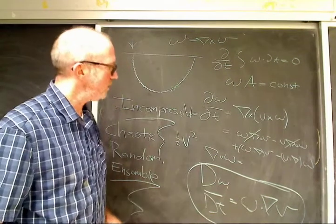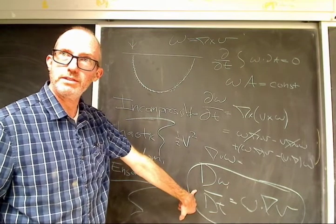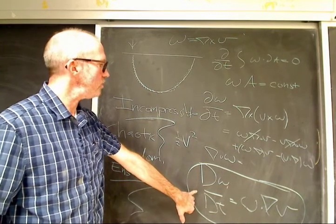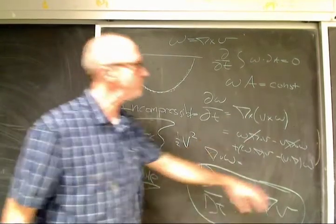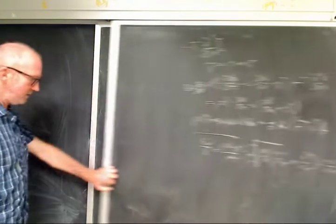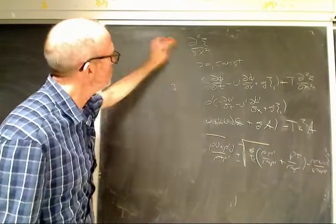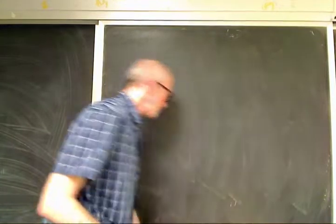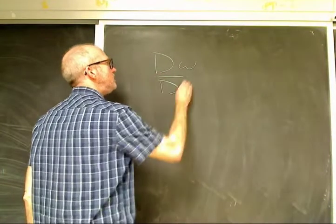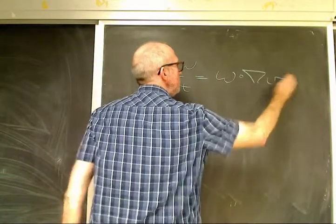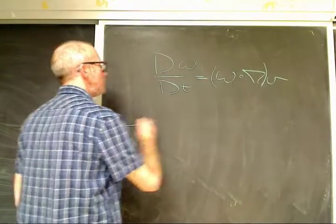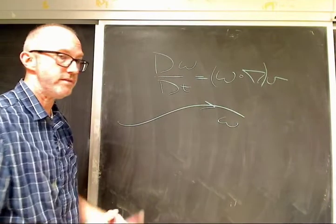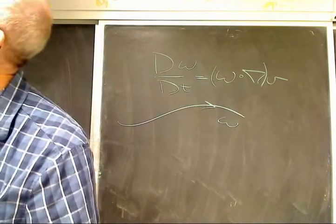The vorticity equation D omega/Dt equals omega dot grad v — this is just accurate, no approximations. This is the vortex stretching equation and it tells us something very important. The equation says that if I have some vortex tube omega, I pick a point, I follow omega up here some distance, and I take the difference — I get v2 and v1. So omega dot grad v is going to be (v2 minus v1) over delta x as the two things get smaller.